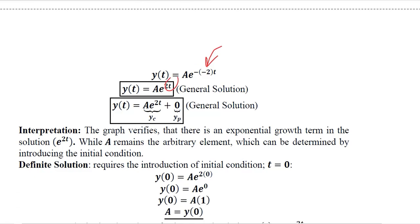Once a is substituted, we get the general solution. The exponential part shows the deviation — that is the complementary function — whereas there is no particular solution yp; if we write it as 0, it is also acceptable. This means that the equilibrium lies at 0.